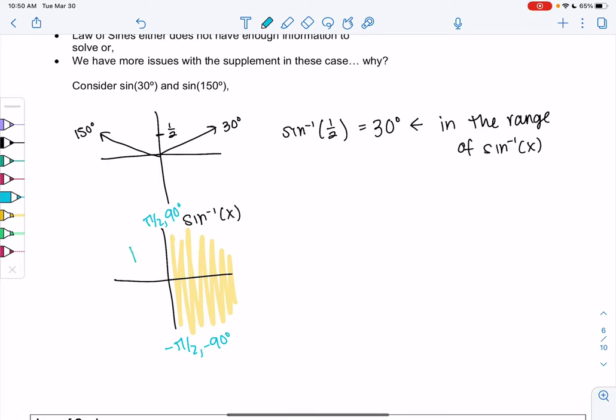So sine inverse is really only going to give me angles in these two quadrants, but what if my angle is in this quadrant?